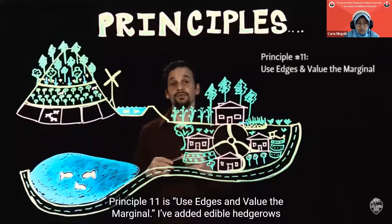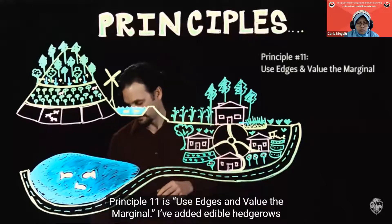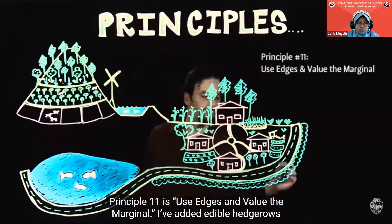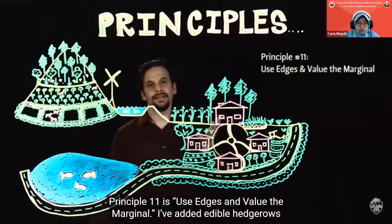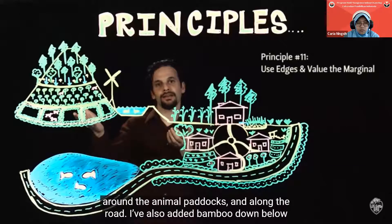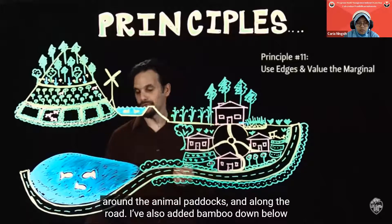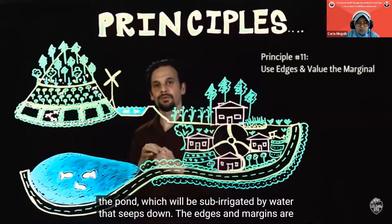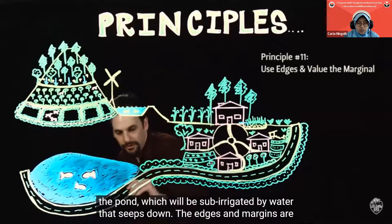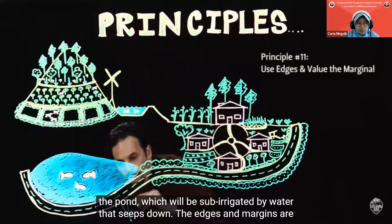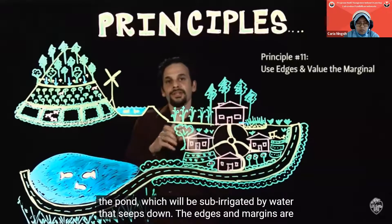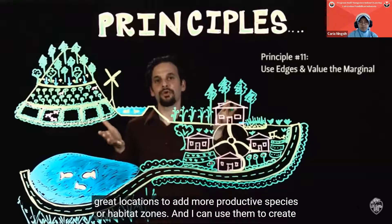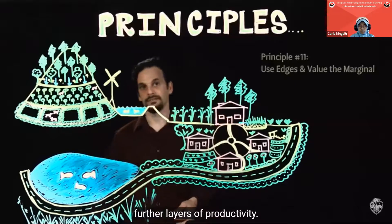Principle eleven is use edges and value the marginal. I've added edible hedgerows around the animal paddocks and along the road, and bamboo below the pond, which will be sub-irrigated by water that seeps down. The edges and margins are great locations to add more productive species or habitat zones, and I can use them to create further layers of productivity.